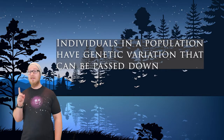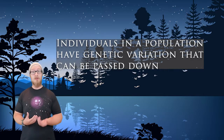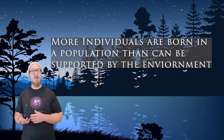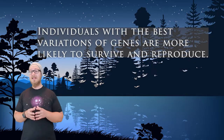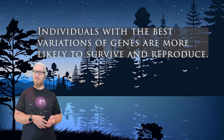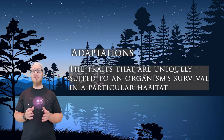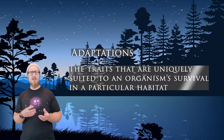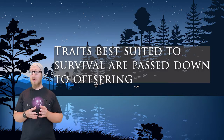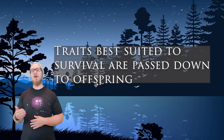The mechanism underlying the process of evolution is natural selection, which relies on four basic principles. Number one, individuals of a population have some sort of genetic variation that is heritable. Number two, more individuals are born in a population than can possibly be supported by the environment. Number three, individuals with the best variation of genes are more likely to survive and reproduce — adaptation is the term we use to describe traits uniquely suited to an organism's survival in a particular habitat. And number four, the traits that are best suited to survival will be passed down to offspring.